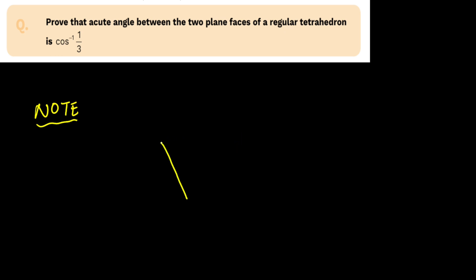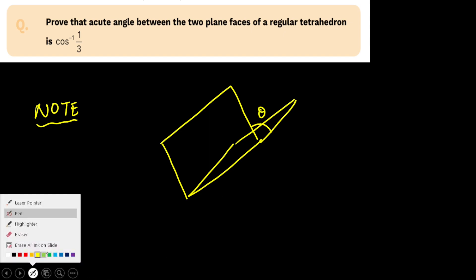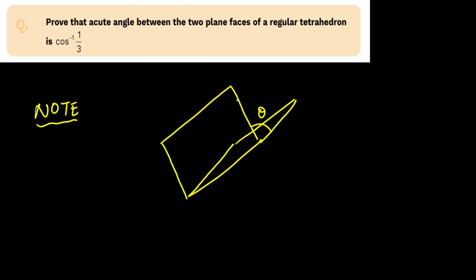Let's say this is our first plane and one more plane like this. The angle between these two plane faces is theta. Now if I calculate the angle between these two plane faces and between their normals — let's say N1 is the normal to the first plane and N2 is the normal to the second plane — the angle between the two faces is the same as the acute angle between the two normals to these plane faces. I am going to use the same logic in the tetrahedron.